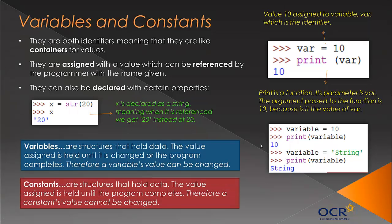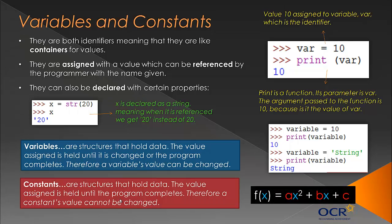Which is key because constants, as the name suggests, don't change. They're similar to variables - I mentioned they're sort of a type of variable. But regardless, they're structures that hold data. The value assigned is held until the program completes - not until it's changed, because it can't be changed. As soon as it's assigned or declared, it doesn't change through the execution. In Python, I know a lot of people use Python in this GCSE, so I'm keeping with that.